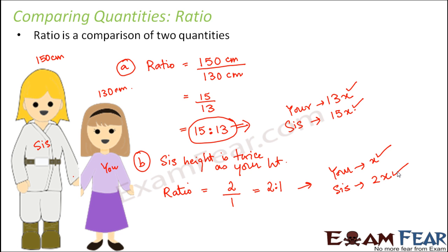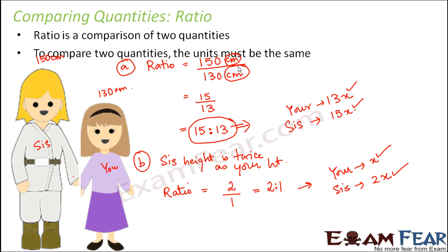Another very crucial thing about finding ratios is that you need to ensure that both quantities have the same units. Here, both quantities are in centimeters, which is correct. You cannot have one quantity in meters and the other in centimeters. To compare two quantities, the units must be the same.